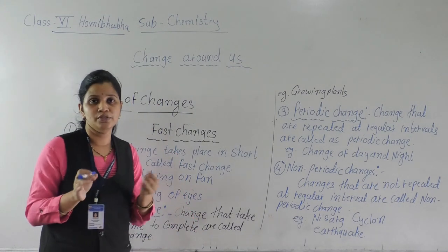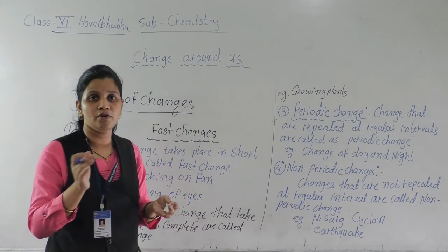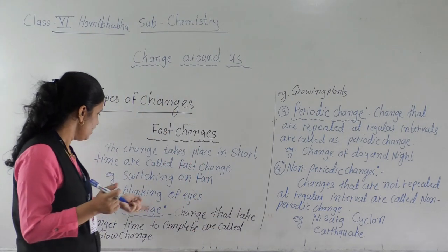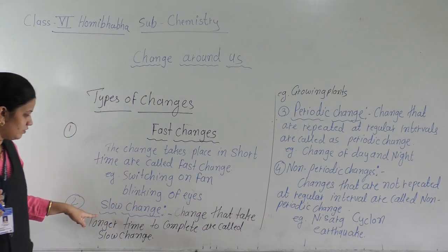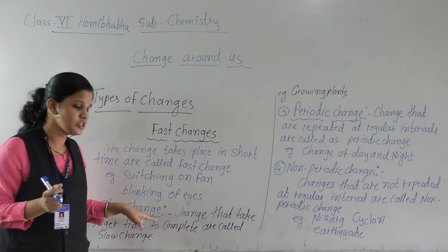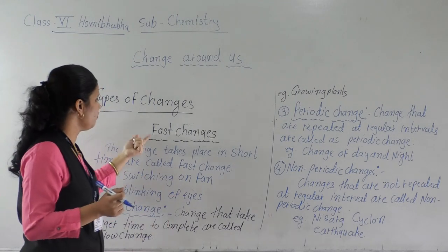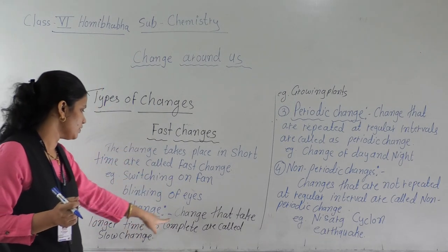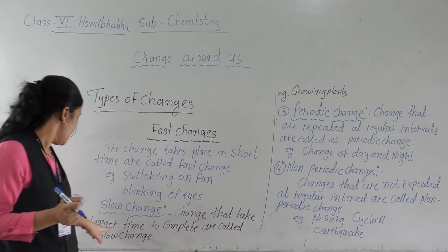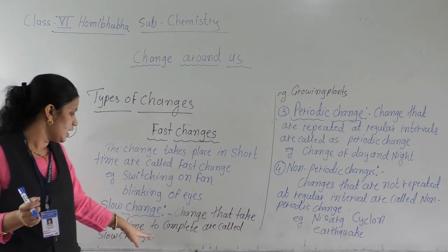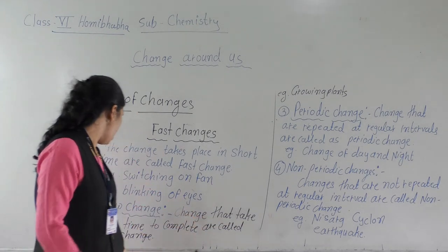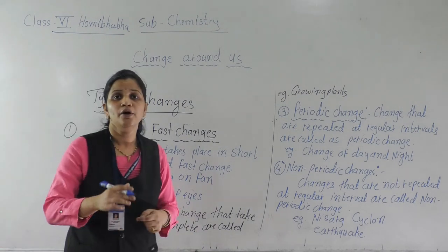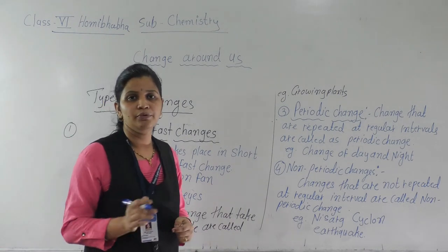All changes that happen very fast are fast changes. Now the second type is slow change — it is totally opposite of fast changes. Slow changes means: changes that take a longer time to complete are called slow changes. It takes more time to complete.